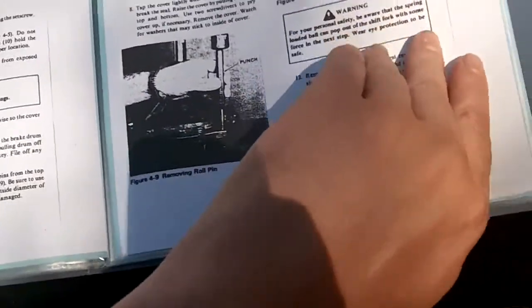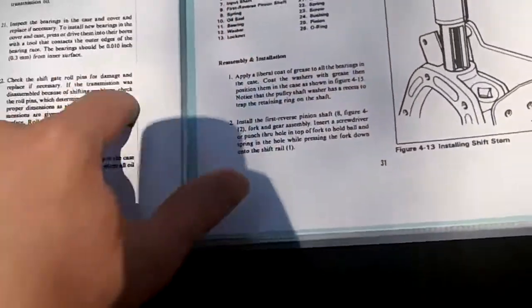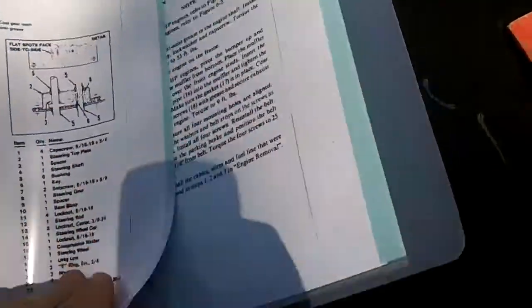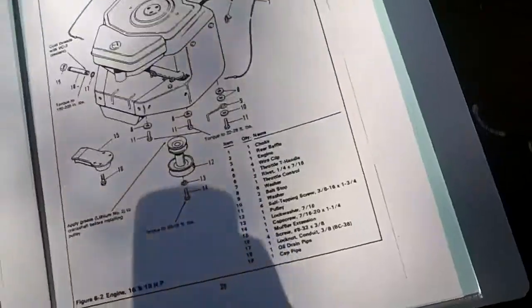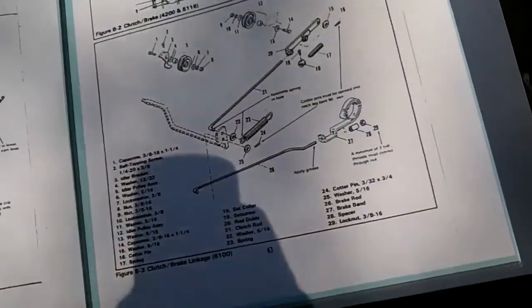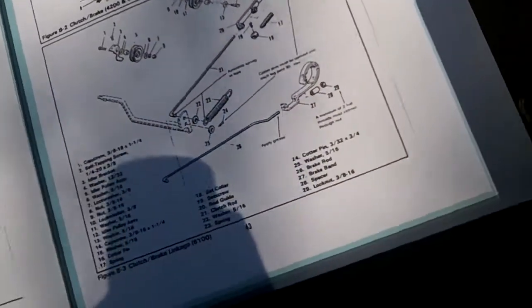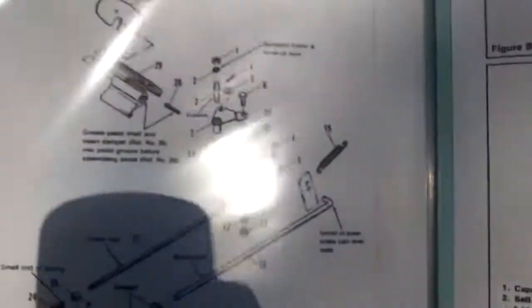We basically got these Simplicity manuals here free from Briggs, so I just share them with everybody. I'm not sure if my owner's manual is in here, but I know the parts manual is. Oh, they got the owner's manual printed. There's clutch and brake system - that helps. You can even see that.